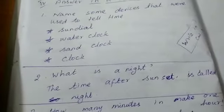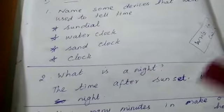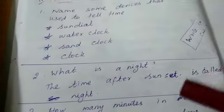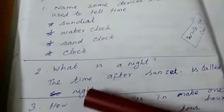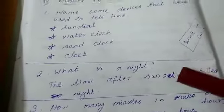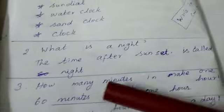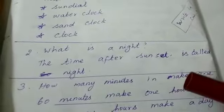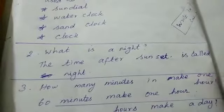So what is night time? That means the time after A-F-T-E-R, after sunset is called night.